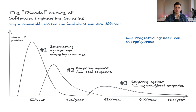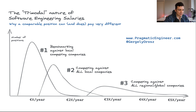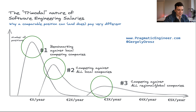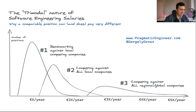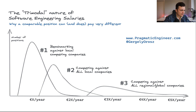Before we dive into the salary research, I'd like to explain one thing. The software engineering market follows the tree model concept. Let's look at the picture — it's easier to explain when you see it. As you can see on the chart, the Y axis shows the number of positions and the X axis shows the compensation level. We'll also see three spikes. Each spike refers to a company tier, meaning the tier is determined by the company's size and earnings. By researching the spikes, we can understand that companies mostly split into three types, which we call tiers.